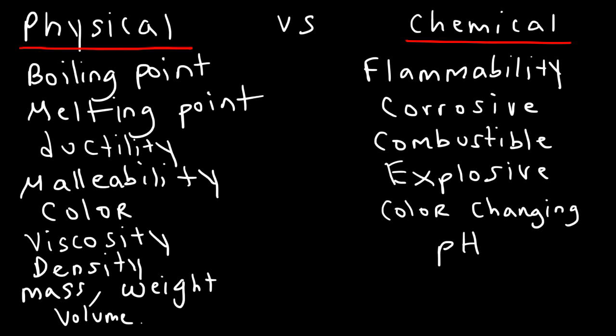Now, what about taste? Taste is a chemical property. Let's say lemonade tastes sour — it's because it's acidic. Or that substance tastes bitter — it's basic. Your body is reacting to the different pH levels in these solutions. So, taste is a chemical property. The taste of lemonade is acidic, so that's describing the acidity of that drink. Hopefully, this video helps you clarify the difference between physical properties and chemical properties.